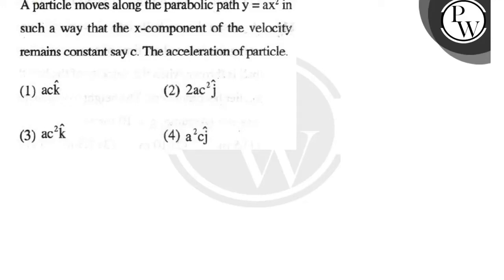A particle is moving along the parabolic path y = ax² in such a way that the x-component of the velocity remains constant c. Find the acceleration of the particle.